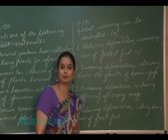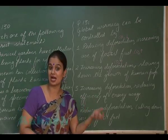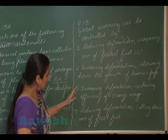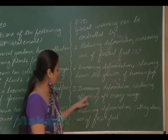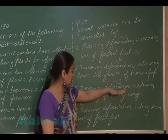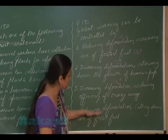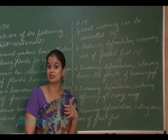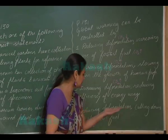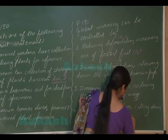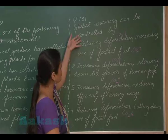Slowing down the growth of the human population would decrease carbon dioxide emissions from human activities, so this would help. Increasing deforestation again would raise greenhouse gas levels. Reducing deforestation decreases carbon dioxide because plants fix it, and cutting down fossil fuel use also decreases carbon dioxide. Together, these measures reduce greenhouse gases and control global warming.